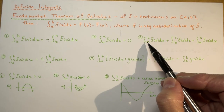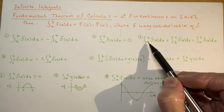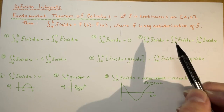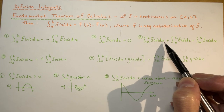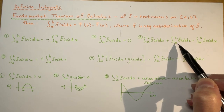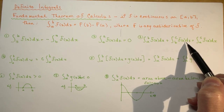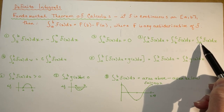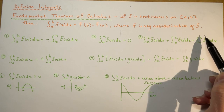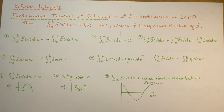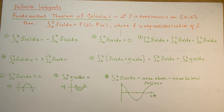Now, if I have a definite integral from a to b of f(x) dx plus from b to c of f(x) dx, that's the same as evaluating it from a to c. In other words, all you're doing is adding the two areas together, so you might as well evaluate them all at once.